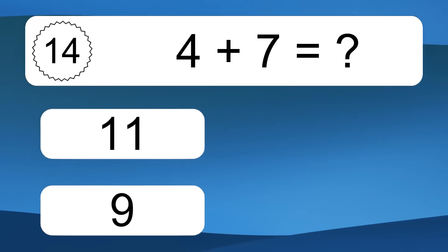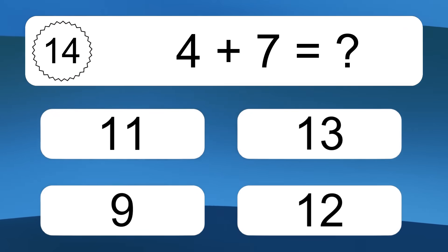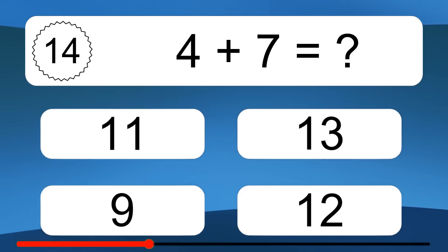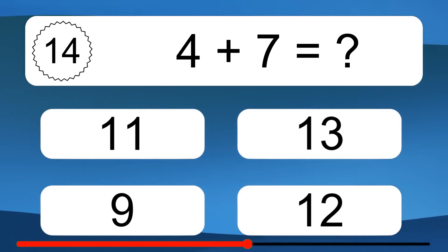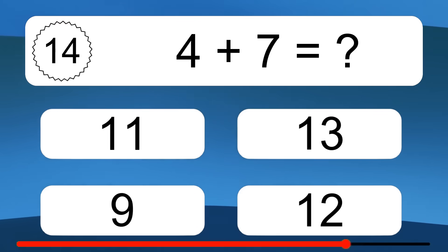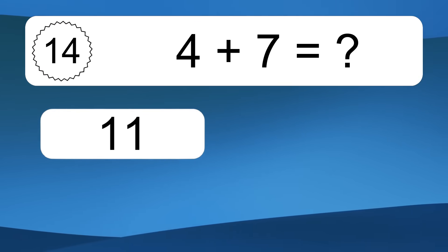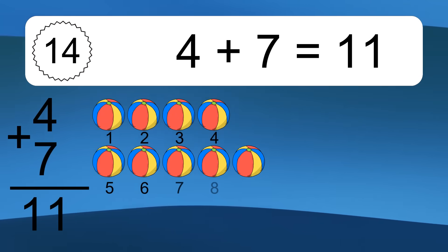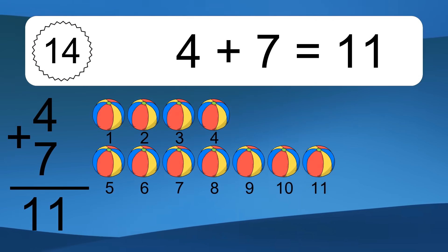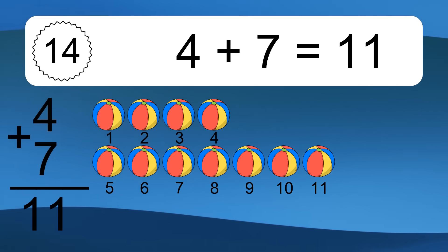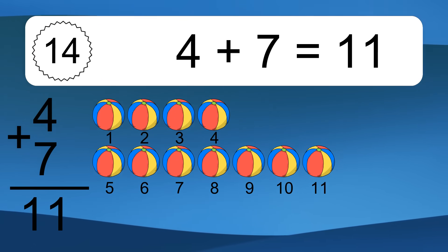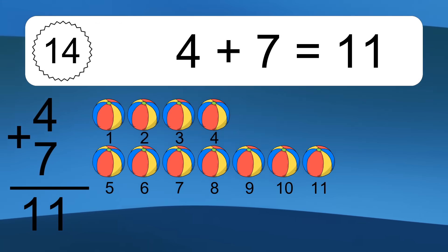4 plus 7 equals what? 4 plus 7 equals 11. Let's count it: 1, 2, 3, 4, 5, 6, 7, 8, 9, 10, 11.